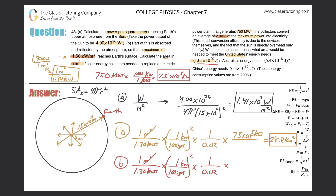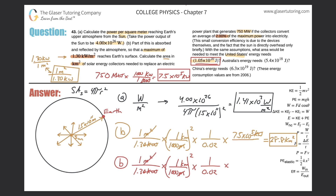The only change is in this category, because previously the problem gave us the power generated by a power plant. Now instead of telling us power, they're giving us an energy value. We need to cancel the kilowatt unit, so we actually need to take this value in joules and convert that into power.